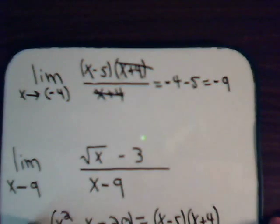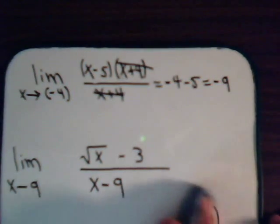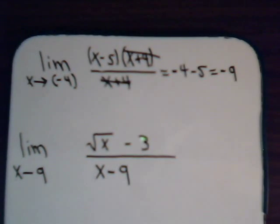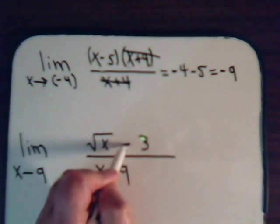So let's take a look now at the second one. And again, we have the same problem. If we replace x with 9, we're going to get 0 down in the denominator.